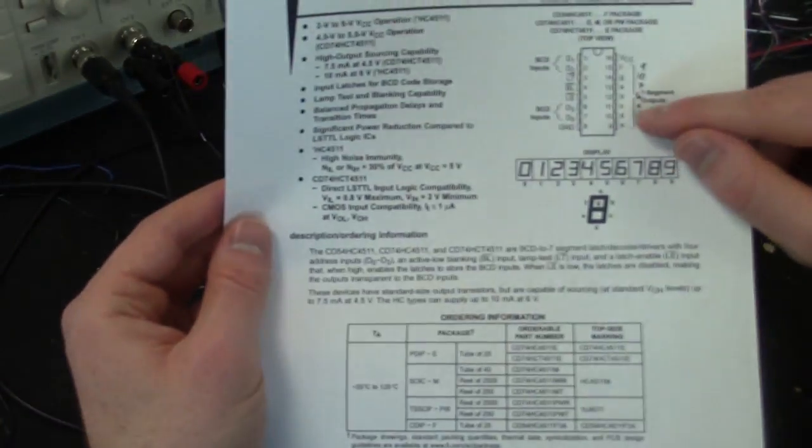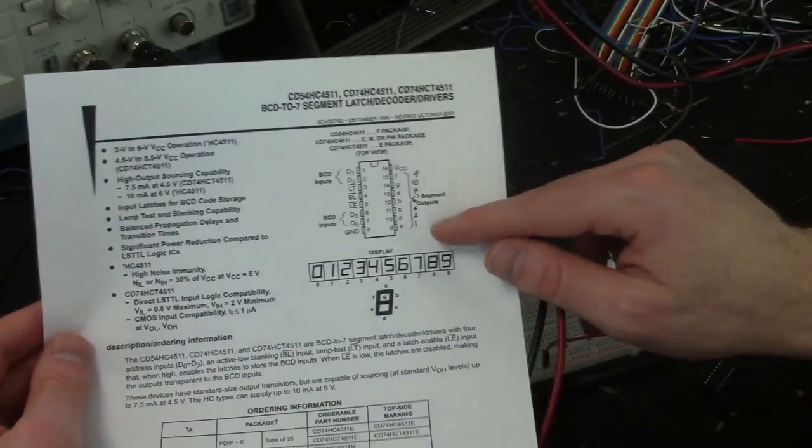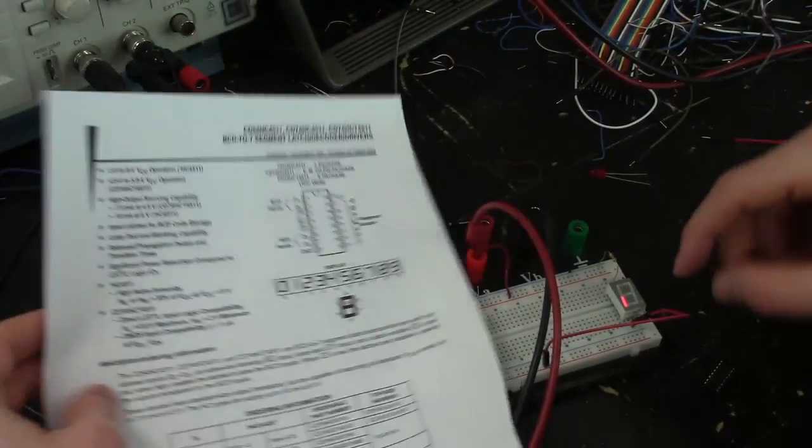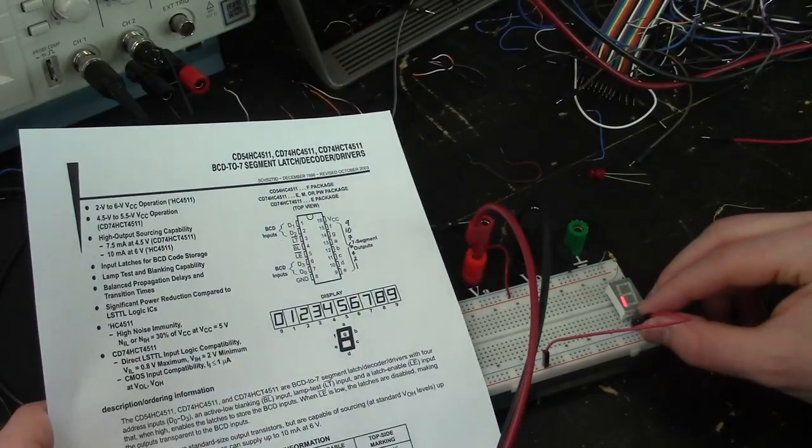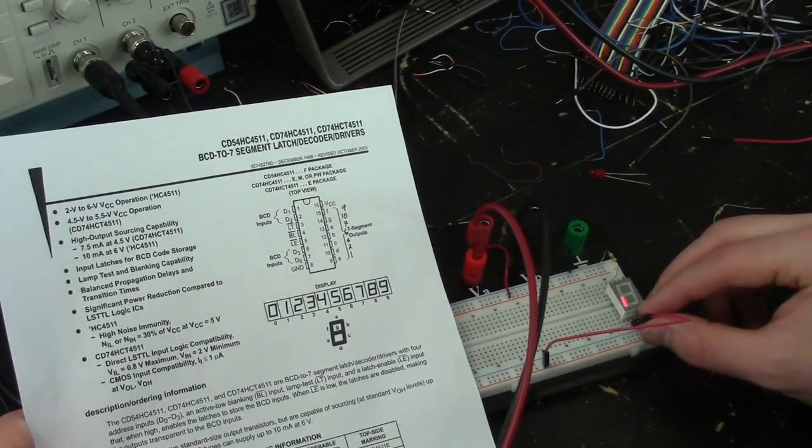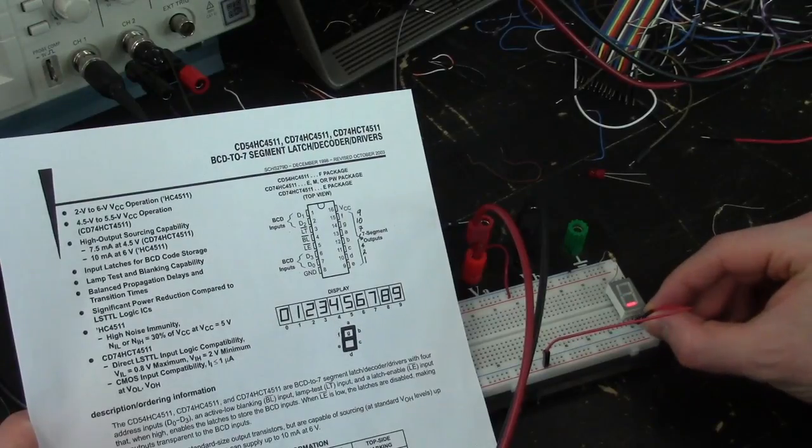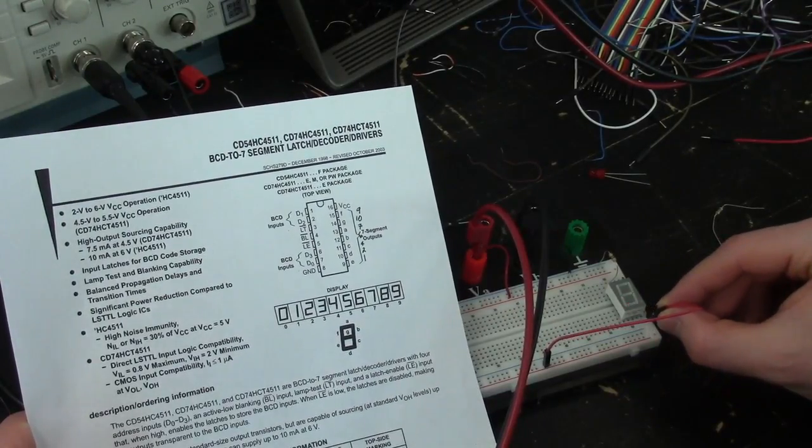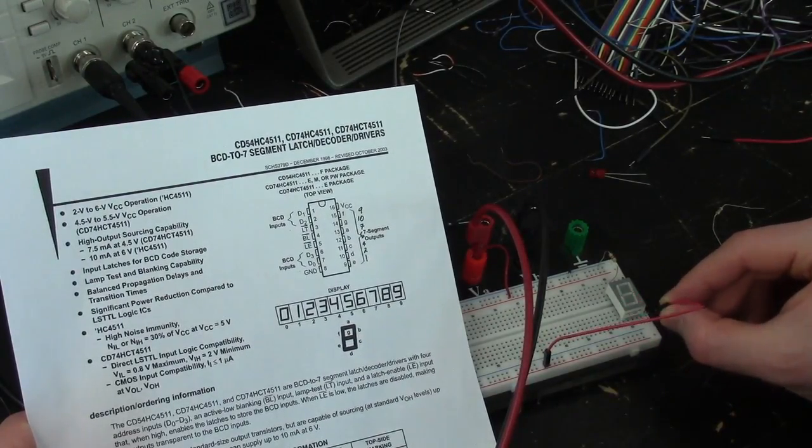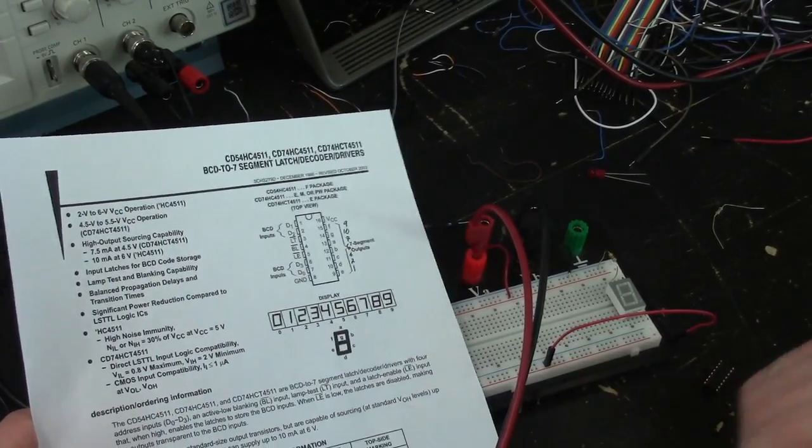And then the output here, which is D, that's number 10. So that'll be on the display output D, which is at the bottom. So let's check that that's next. So you can continue on in order and check that everything lines up correctly to the bits on the seven segment display.